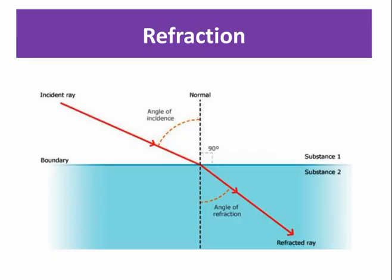Refraction. When light passes from one transparent medium to another, it bends and changes its direction. This happens when light passes from air to water or air to glass.